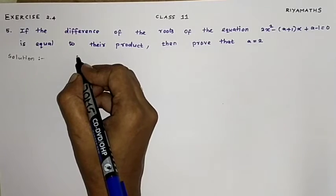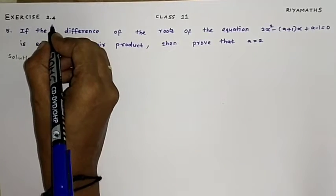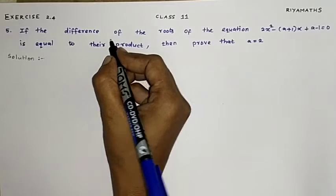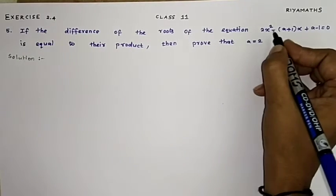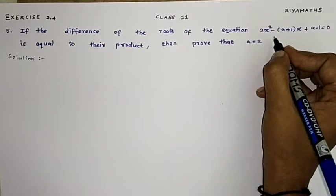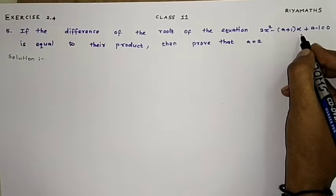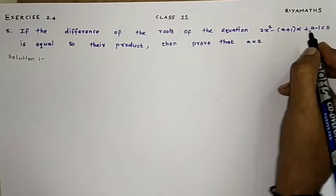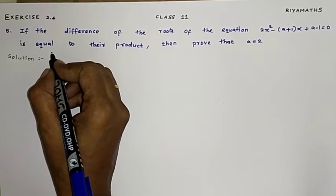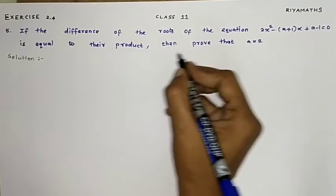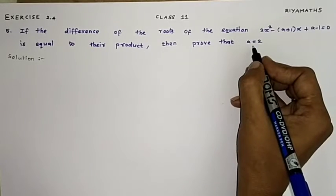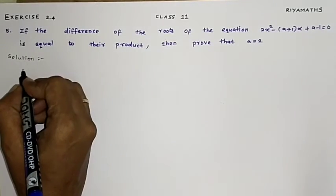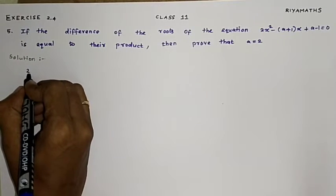Hi students. Question number 5: If the difference of roots of the equation 2x² minus (a+1)x plus (a-1) equals 0 is equal to their product, then prove that a equals 2. So first we have the given equation.